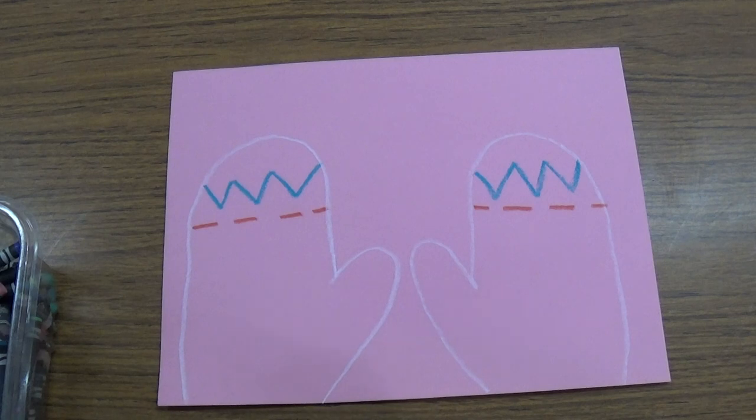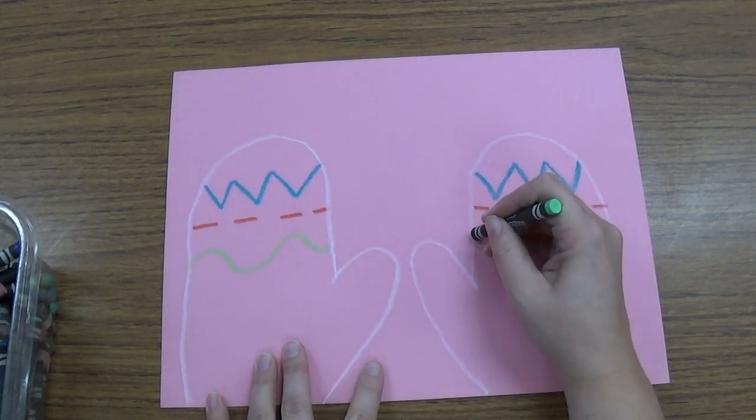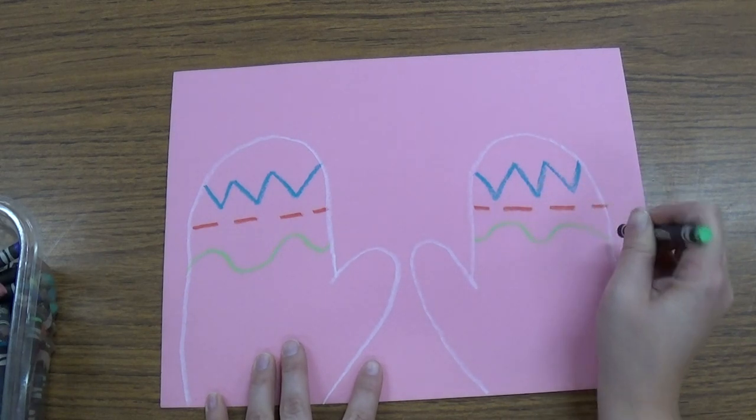If I do a green wavy line on this mitten, I'm going to do a green wavy line on this mitten so that they are symmetrical.